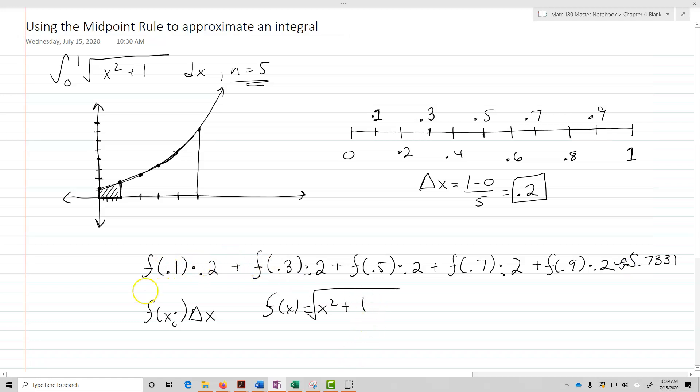So we'll evaluate each point, 0.1 at x squared plus 1 square root, right? 0.3 at the same place, 0.5, and so on and so forth.